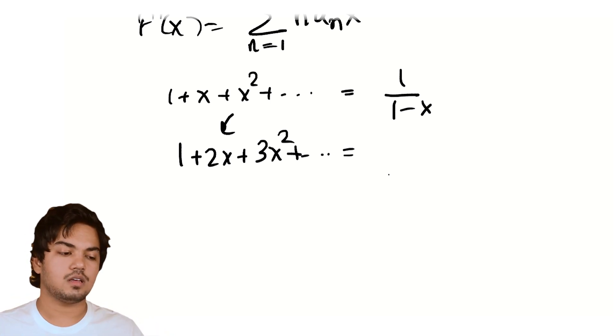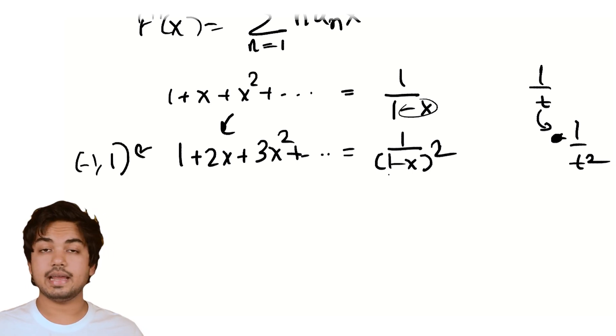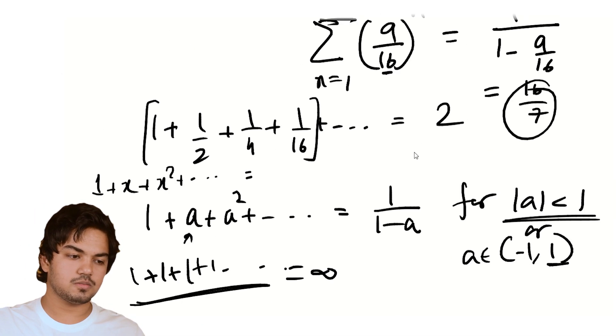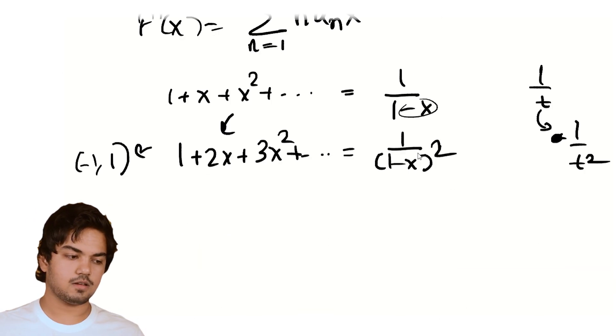This is just 1/(1-x) whole square, right? And this converges. Like if you plug in a number between minus 1 and 1, it makes sense, it works. And that's exactly what we have. Go back to the problem. We had this, right? n times x to the n minus 1. Look at this. This is nothing but sum over n times x to the n minus 1, and n runs from 1 to infinity. Perfect. So our answer is just...